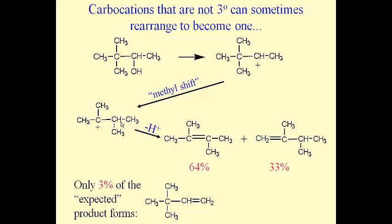Such rearrangements don't always occur. You can't always predict when they're going to happen, but we can use that idea to explain results once they're obtained — why we get double bonds at locations where we would initially not expect a double bond at all. If we're told to be on the lookout for a rearrangement, it's going to occur in the sense of making less stable carbocations more stable: either one that's primary can become secondary, or one that's secondary can become tertiary.